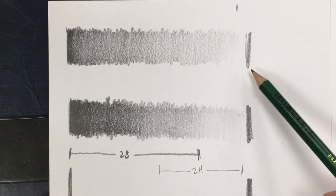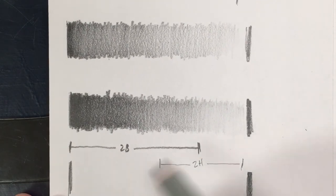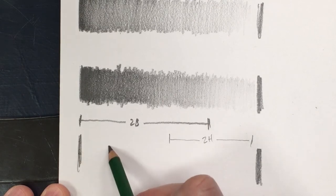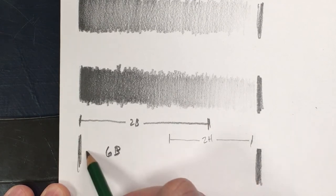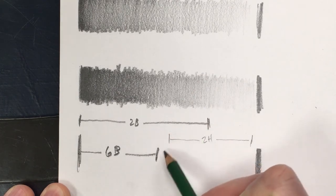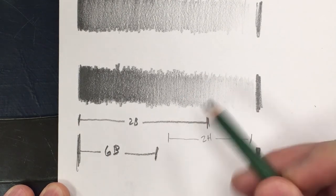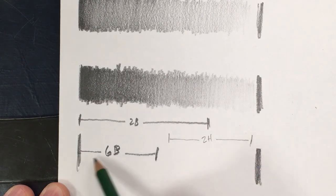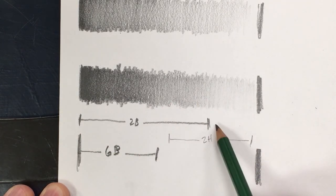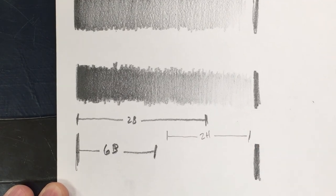Now you can see the difference between full range of value and just using your 2B. You see how underdeveloped this is. It's a progression - you've got 6B blending to 2B, 2B going across here, and 2H blending to the white of the paper.